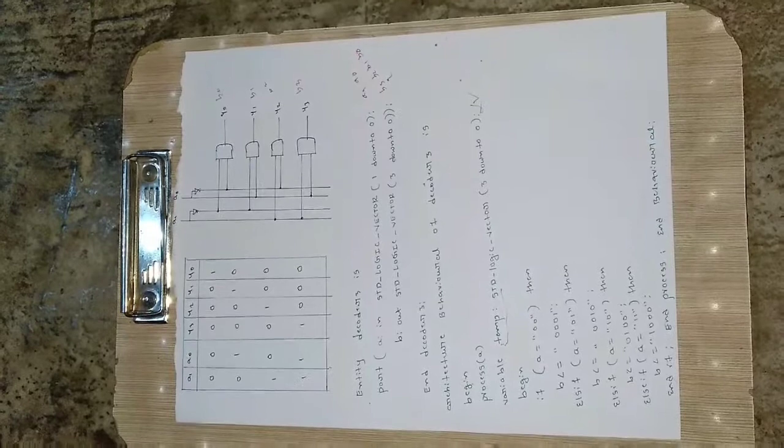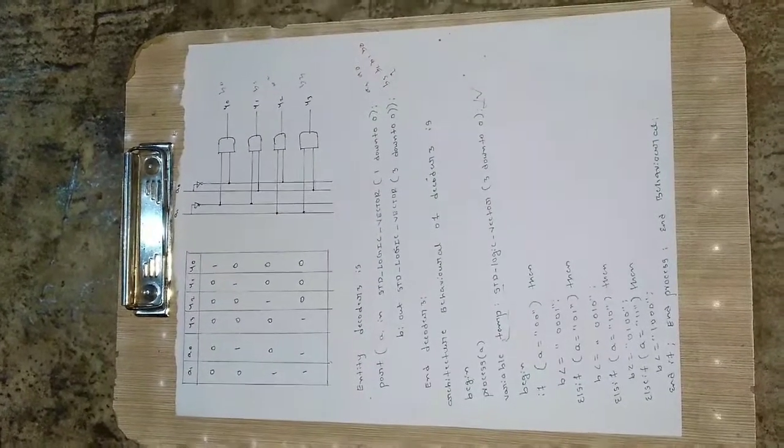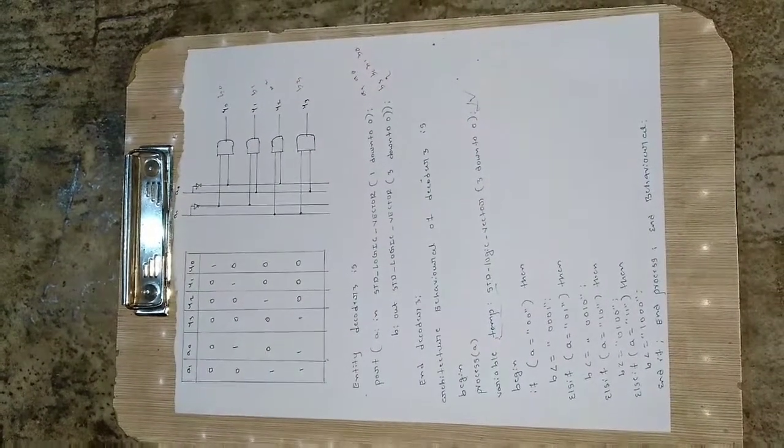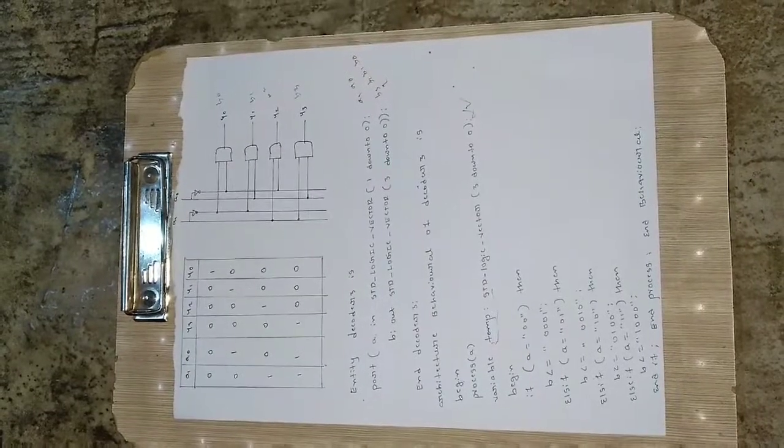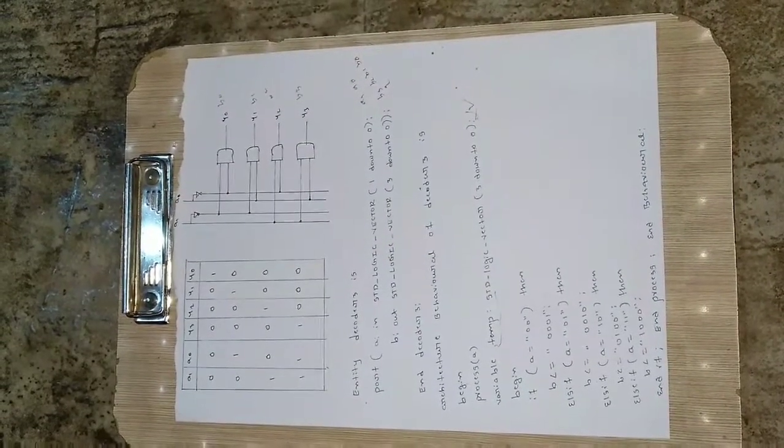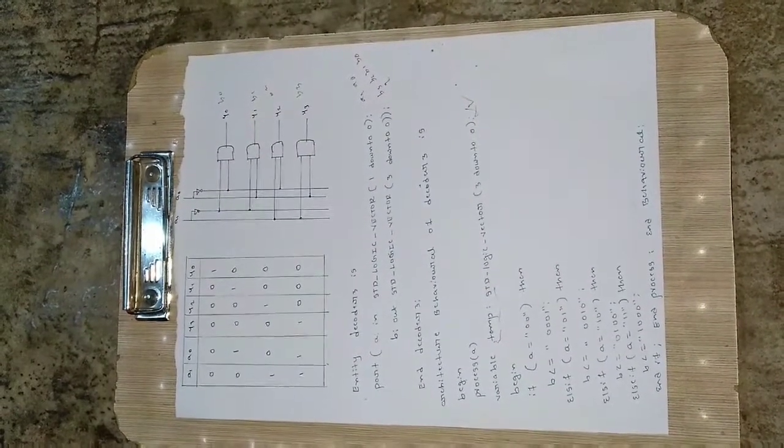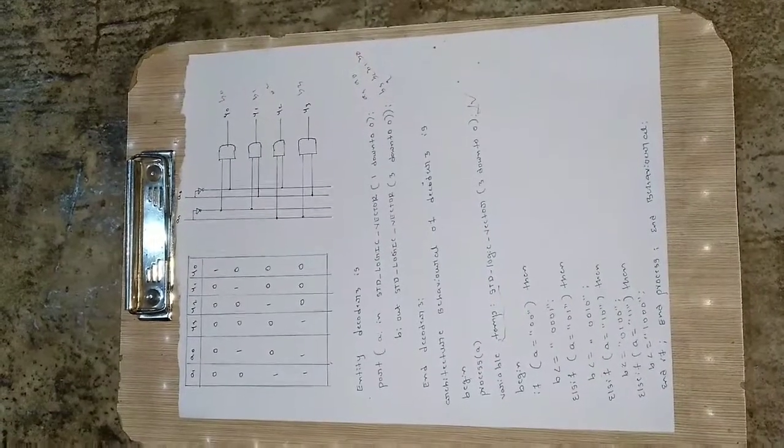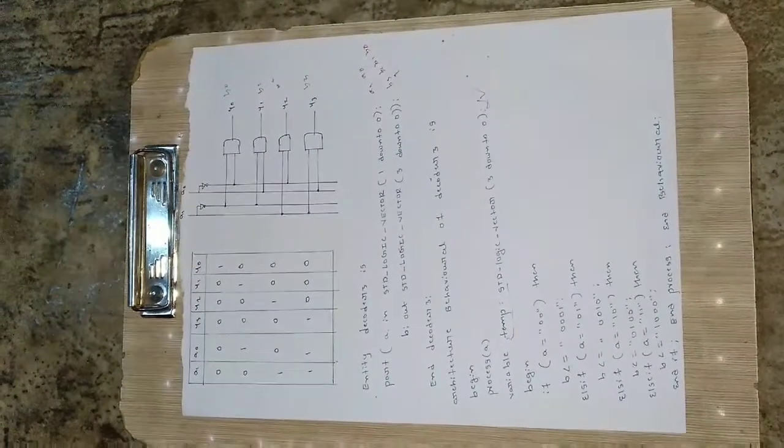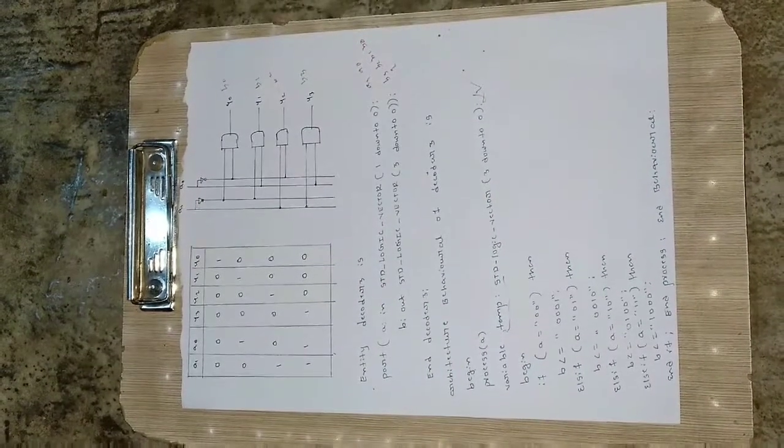So like this we can write the behavioral code for 2 to 4 decoder with the help of the simple block diagram and the truth table with the help of the statements like if and else if. So I hope you like this video. Please guys, if you are new to the channel hit the like button and subscribe the channel for more updates.